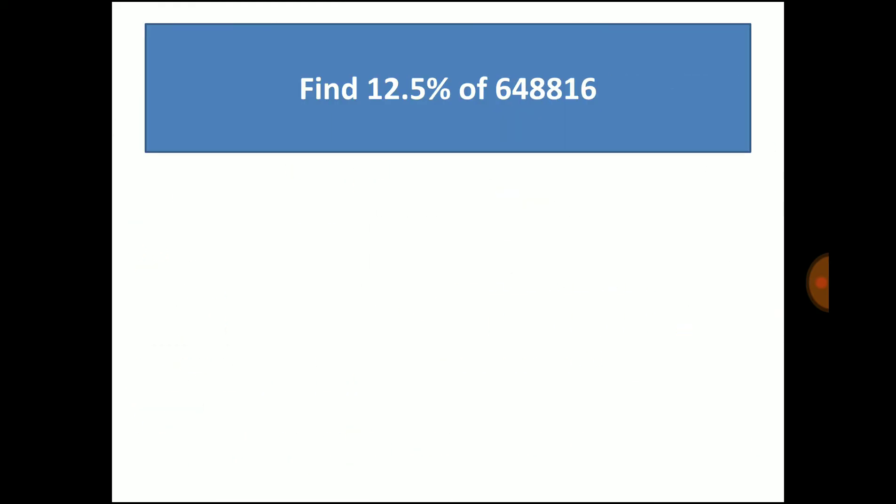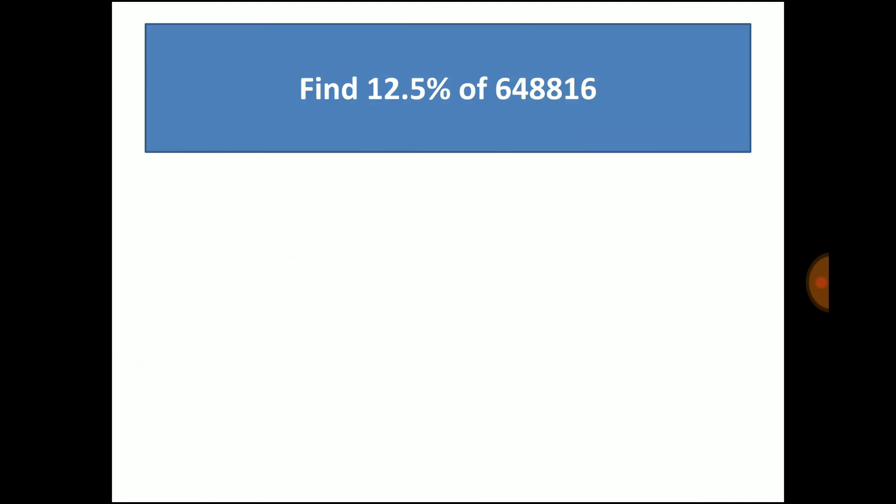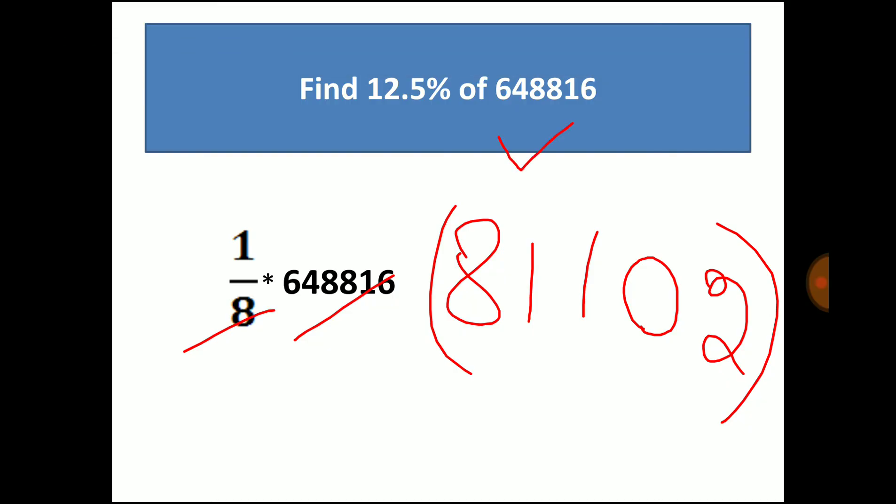Now find 12.5% of 648816. So let us solve this problem using fraction. So 12.5% means we know it is 1 by 8. So instead of writing 12.5 by 100, we can make it as 1 by 8. So multiply 648816 with 1 by 8. So if you cancel 648816 with 8, you get 81102. So 81102 is 12.5% of 648816. It's so simple.